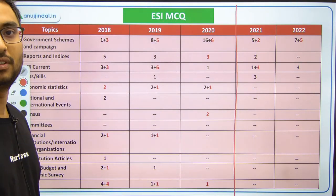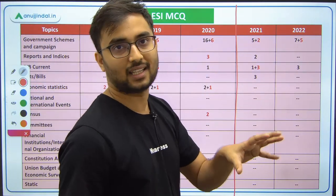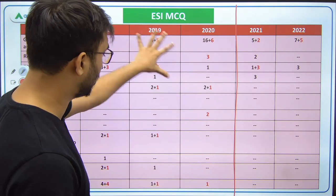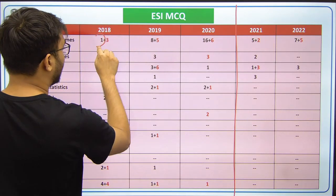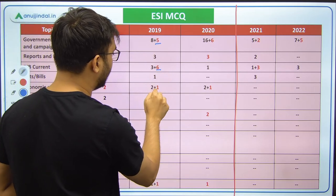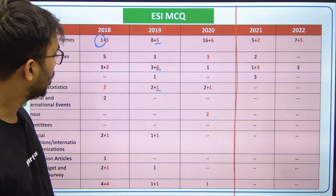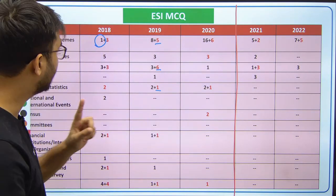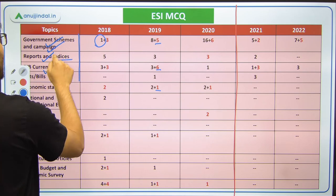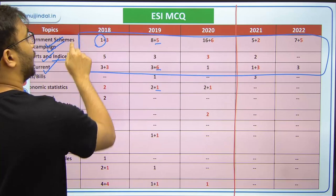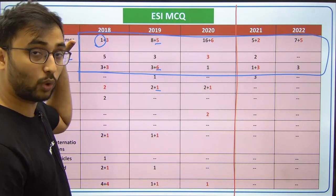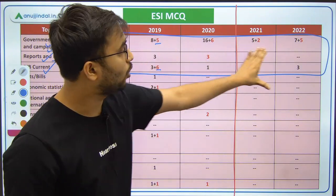Now let's move to the MCQ part — ESI and ARD. For ESI MCQs, as mentioned, till 2020 there were 65 MCQs but now there are 30 MCQs total. In the table, black-colored questions are 2-marker questions and red-colored questions are 1-marker questions. The trend observed is clear: government schemes, government campaigns, initiatives, reports, indices, PIB, and current affairs are always very important for Phase 2 — almost more than 70 percent of the exam questions come from these topics.